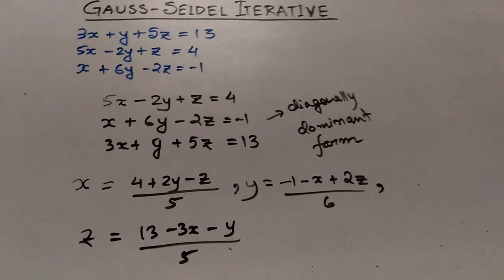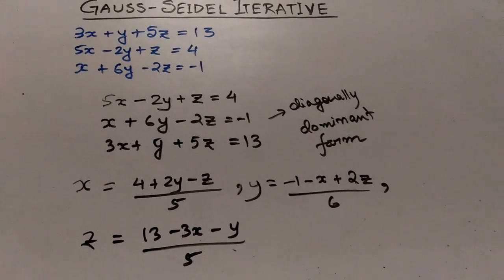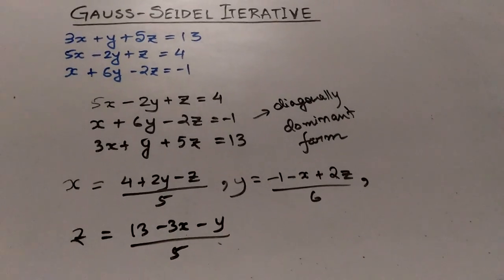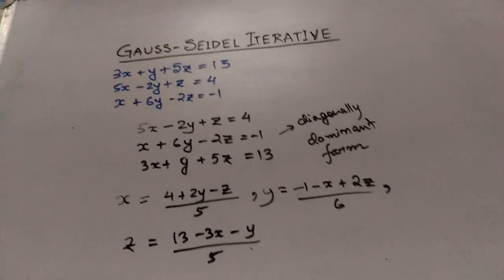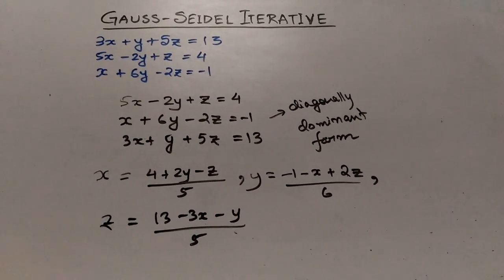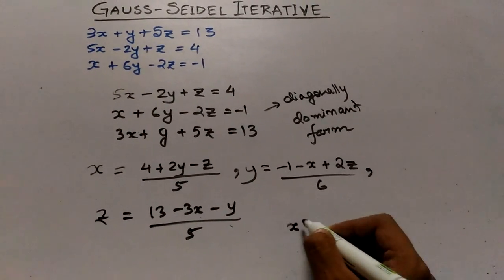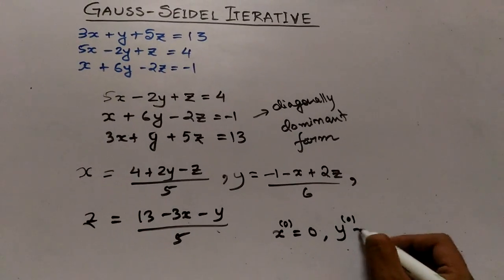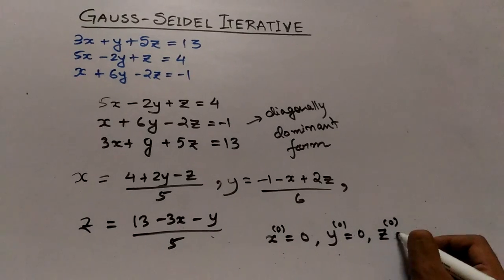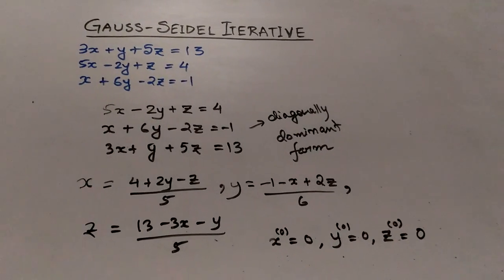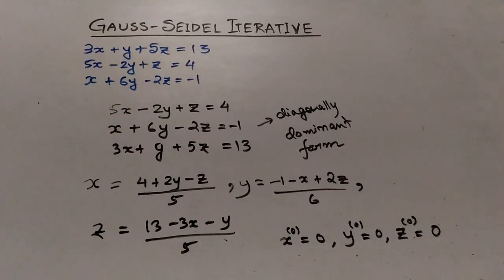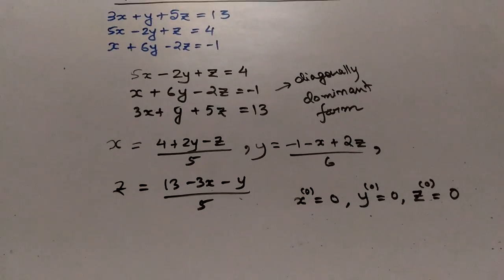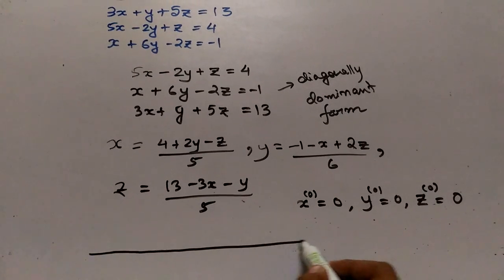So I have written one variable for each equation on one side and the rest two variables on the other side. Now I will assume the initial values for x, y, and z to be 0. I will then construct an iteration table — this is the most important part of this method.